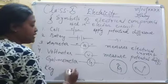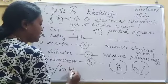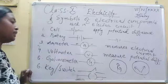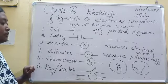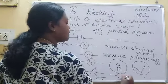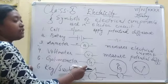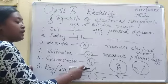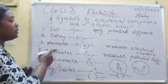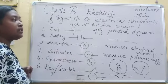Next is the key or switch. Key is represented by this symbol — this is the open key. Open key means current is not flowing through the circuit; it breaks the flow of the current. What is the closed key? This is the closed key — if we join this, then it will be a closed key. The function of the key is to complete the circuit or break the flow of the current; we can say it is a circuit breaker. These are the main components used in the electrical circuit. Other components like resistance and variable resistance will be discussed as we cover other topics.